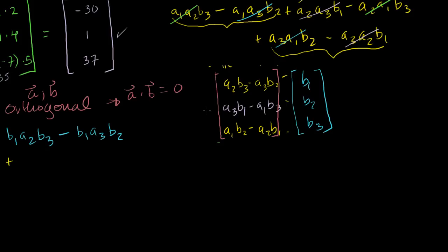And then finally, b₃ times this, so plus b₃a₁b₂ minus b₃a₂b₁. So if these guys are definitely orthogonal, then this thing needs to equal 0. And let's see if that's the case.